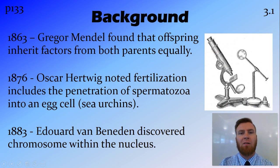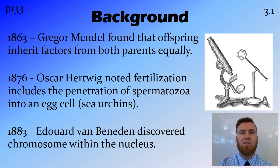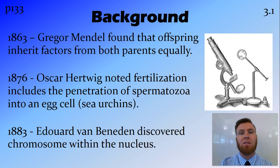A little bit of background as to where cytology — the study of cells — was at the time. In 1863 Gregor Mendel did his experiments with peas. This was followed by 1876 when Oskar Hertwig saw that fertilization was the sperm penetrating into the egg cell, and he did this in sea urchins just the same as Boveri did. In 1883 Edouard van Beneden discovered chromosomes within the nucleus. All this leads up to the discoveries of Boveri and Sutton.